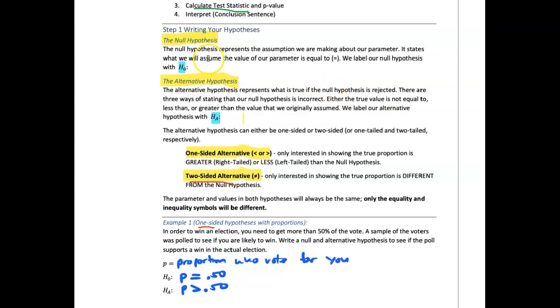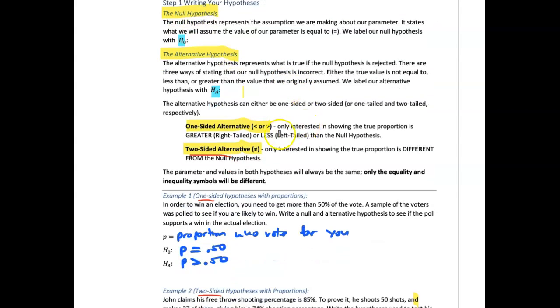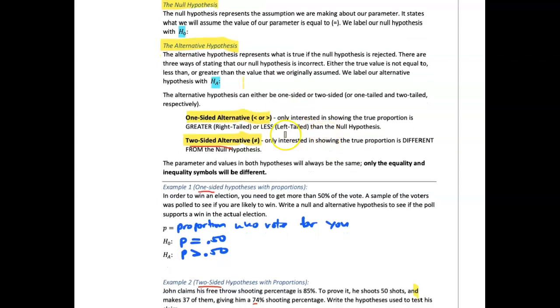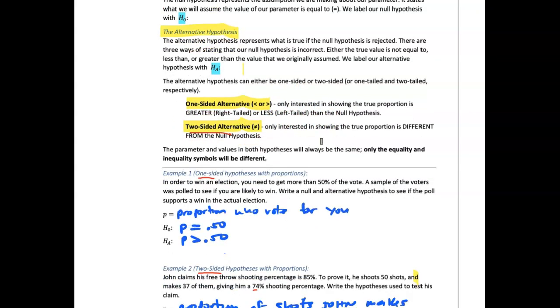But the null hypothesis is the first piece we need to write. And it's our assumption about the population, in this case proportion, is equal to something. The alternative hypothesis, in this case, we say that the alternative is that that proportion is less than that value. It's greater than that value. Or we can say in a two-sided test, say that it's not equal to something.